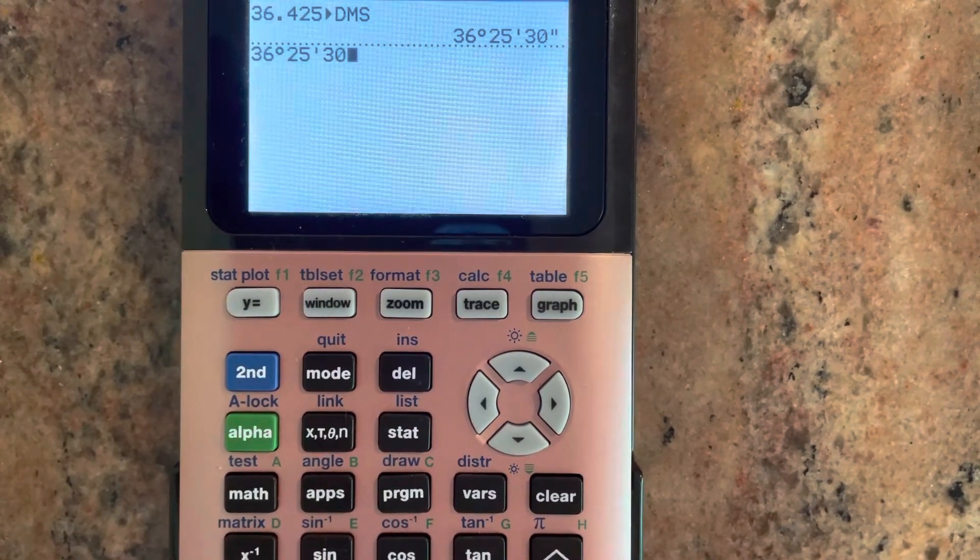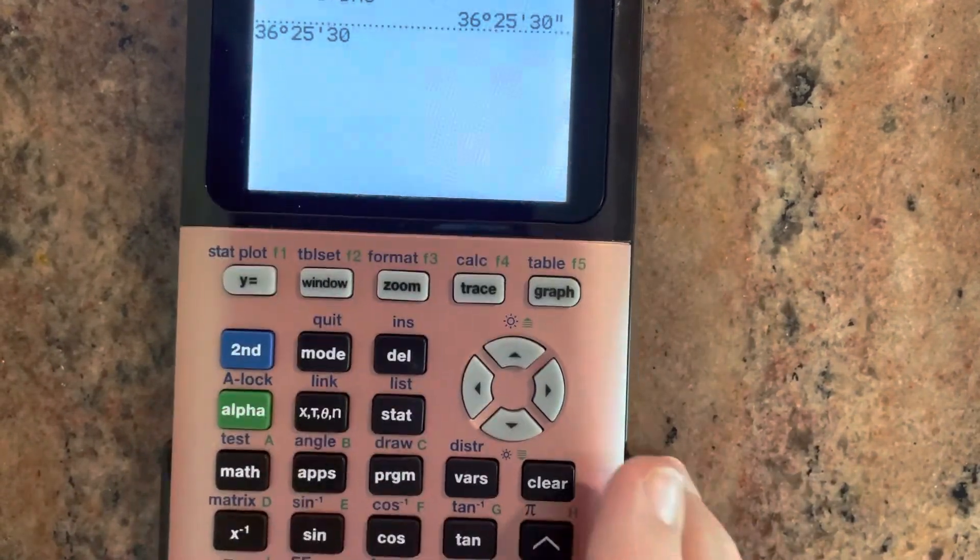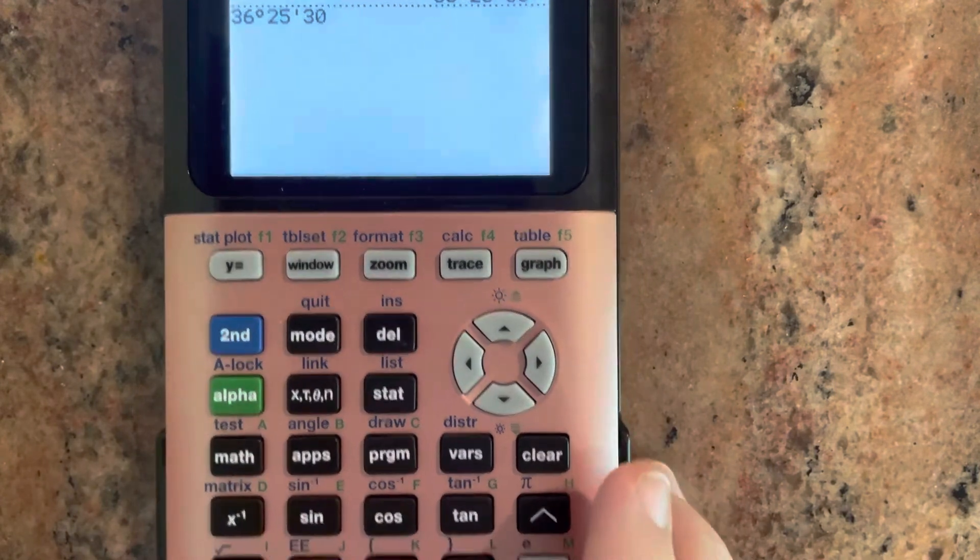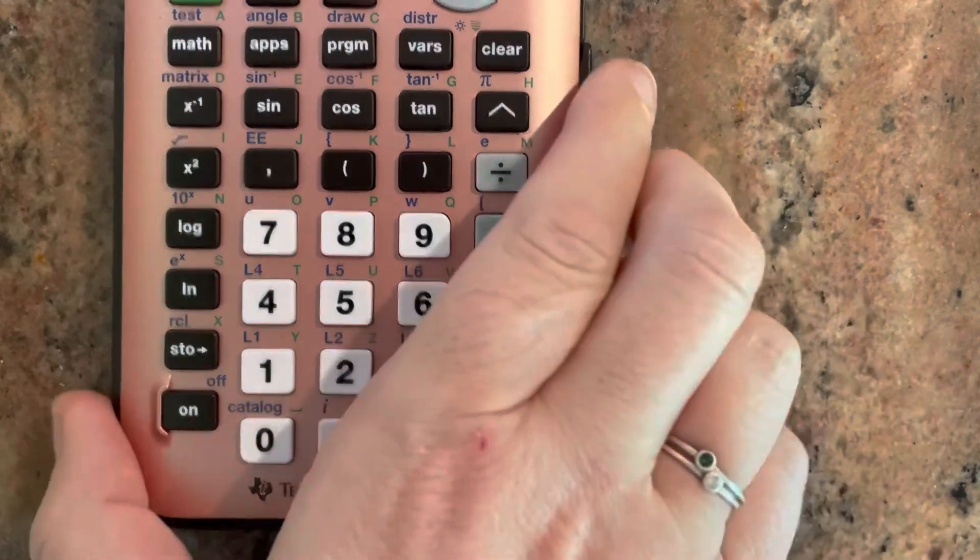And then this is where it's kind of silly. You would think it would also be in the angle menu, but it's not. So we have to find that seconds symbol on your calculator, which is right here above the plus. It's green, the green seconds.